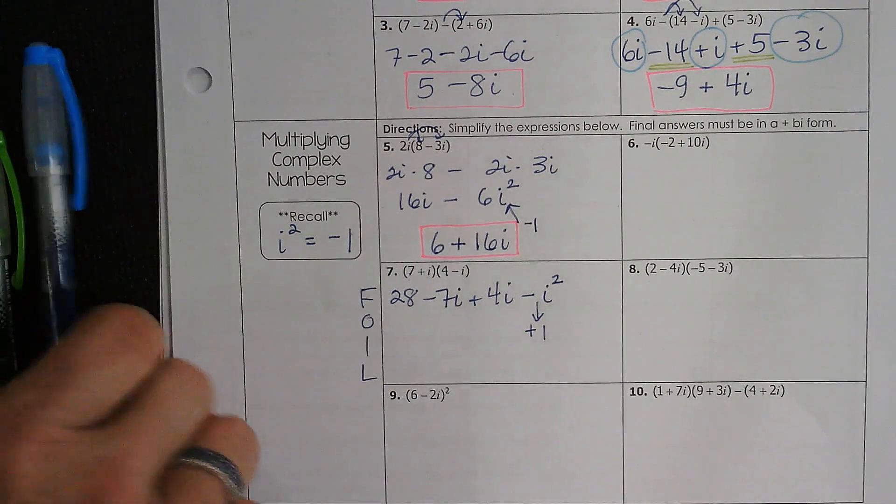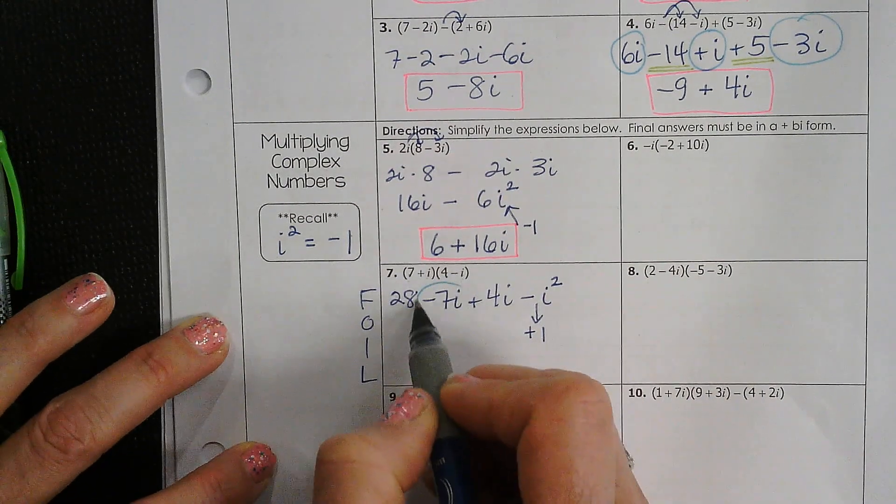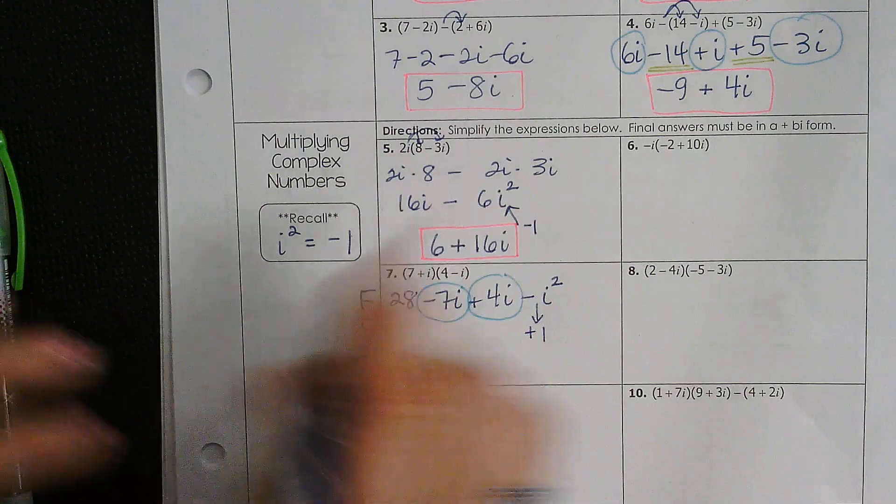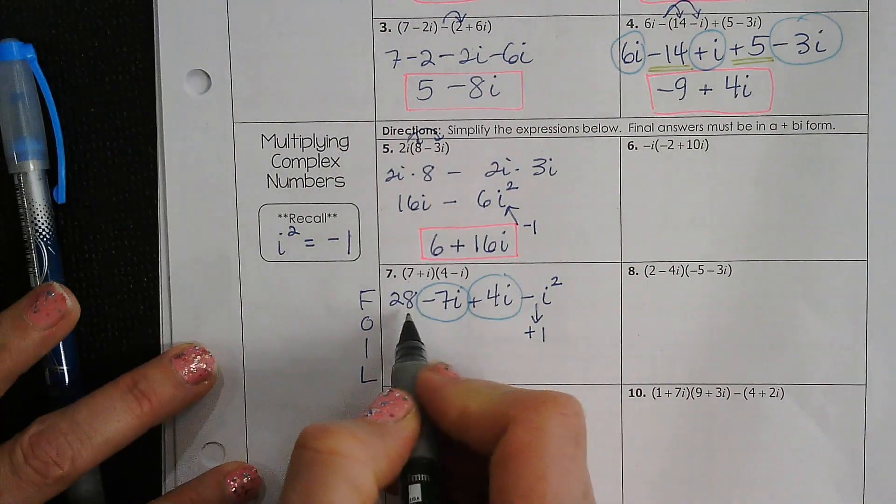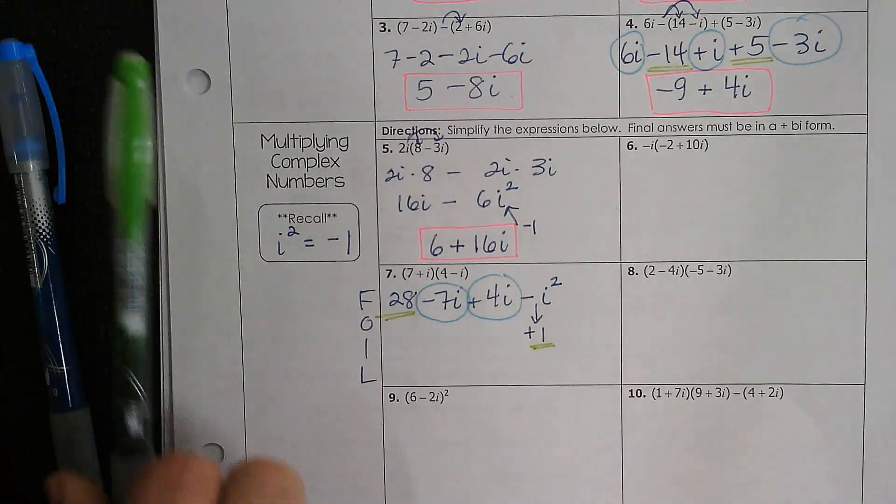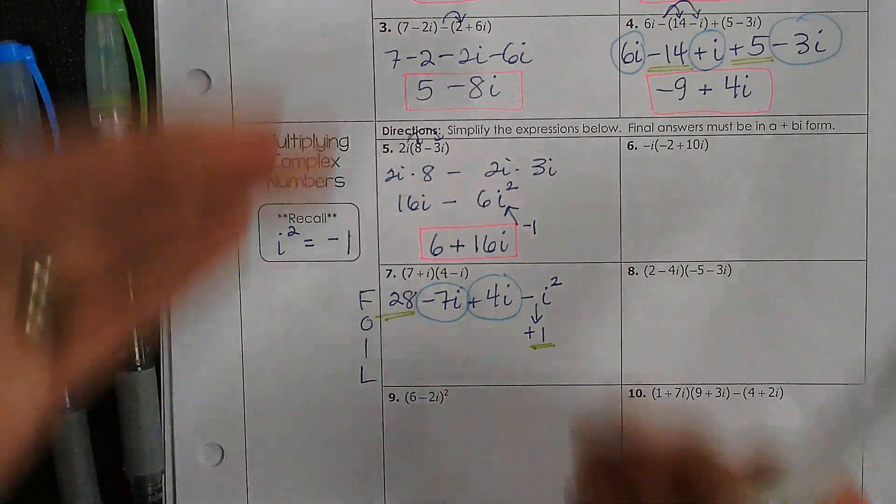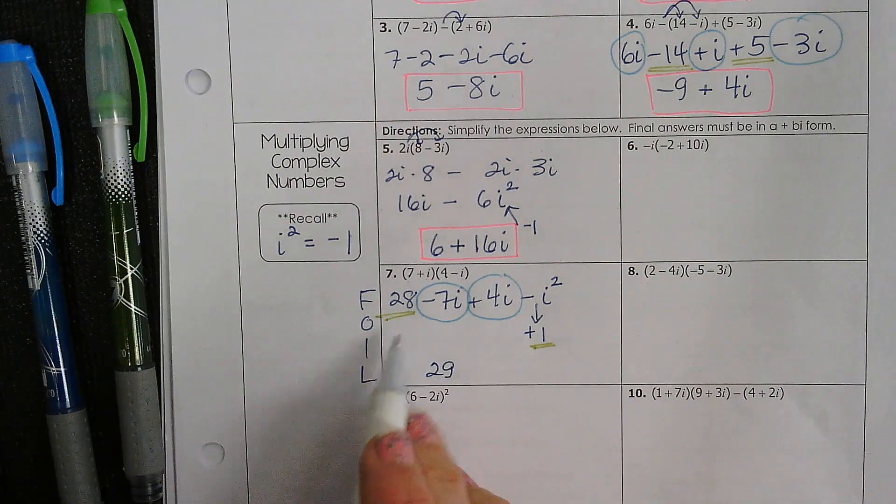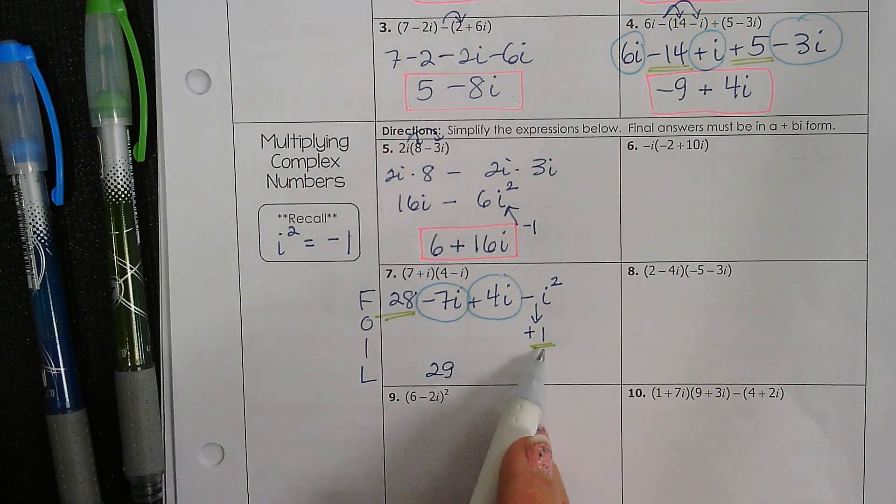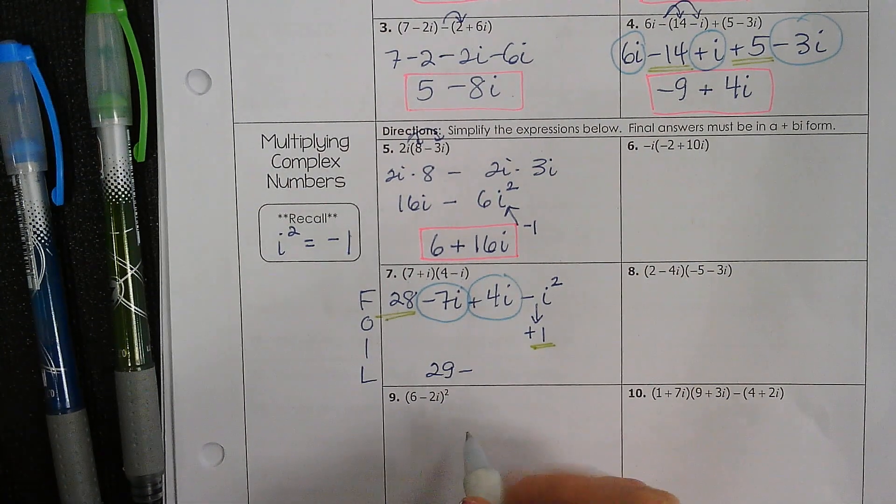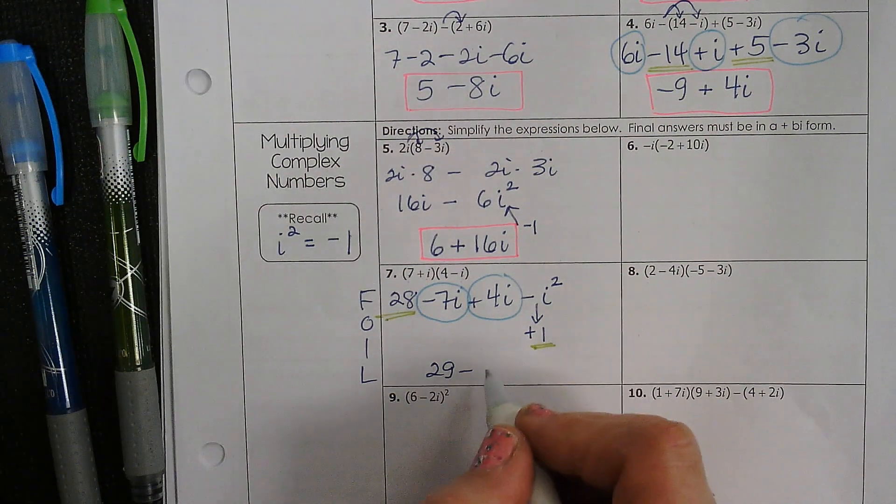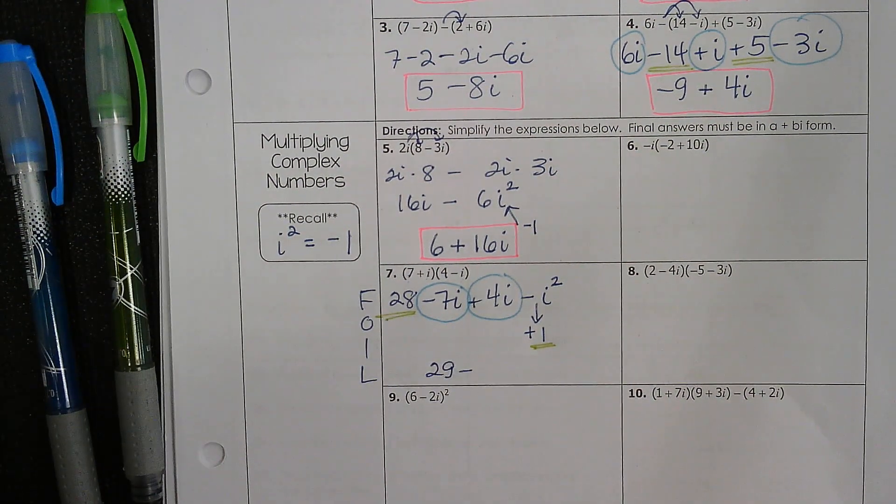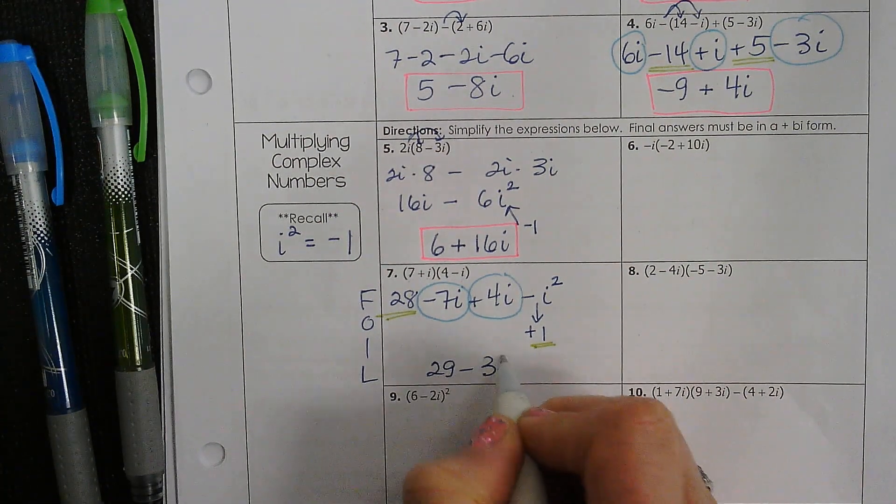So when you go to combine things, you can combine a negative 7i with a 4i. And you can combine a 28 with a 1. Which means your final answer here will be 29 minus negative 7 and 4i. We're going to add those together to give us 3i.